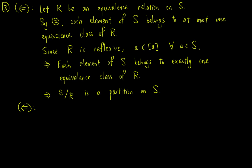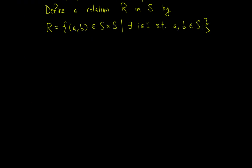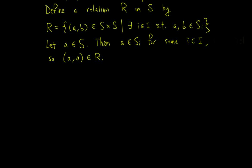Conversely, let {S_i : i ∈ I} be a partition on S. We define a relation R on S as the set of ordered pairs (a, b) in S × S such that there exists i in I with both a and b in S_i. Let A be an element of S. Then A lies in S_i for some i since the S_i form a partition, so (A, A) is an element of R, which implies R is reflexive.